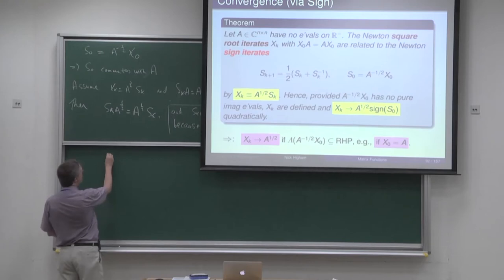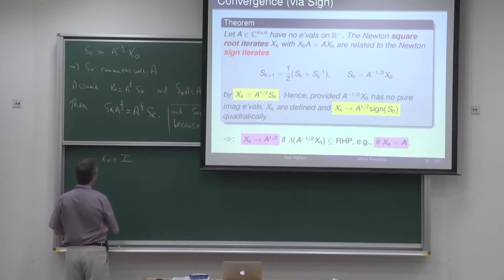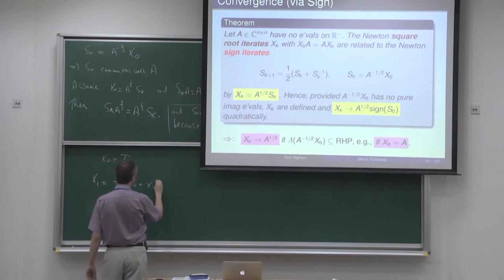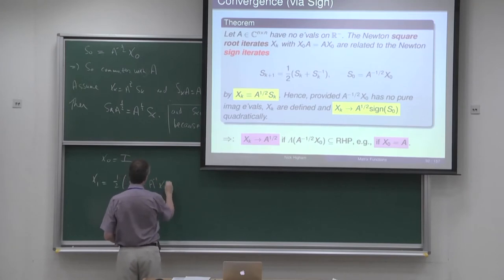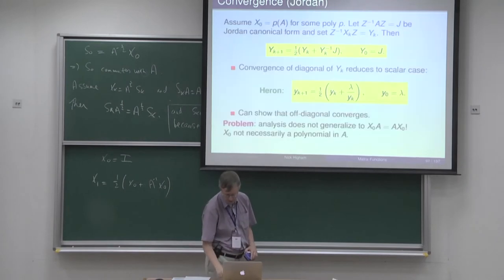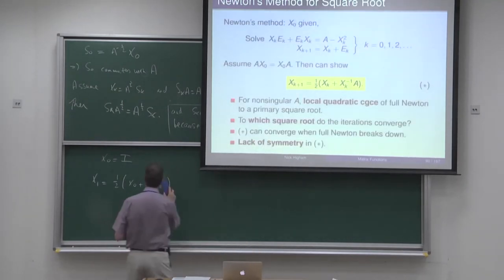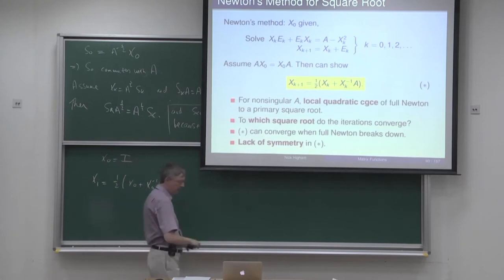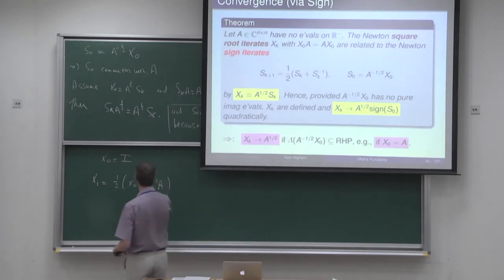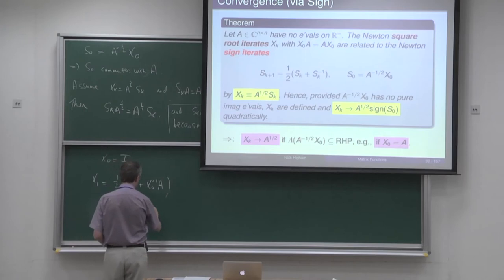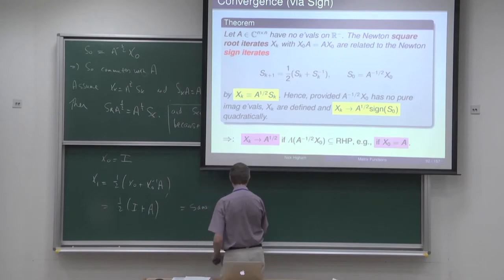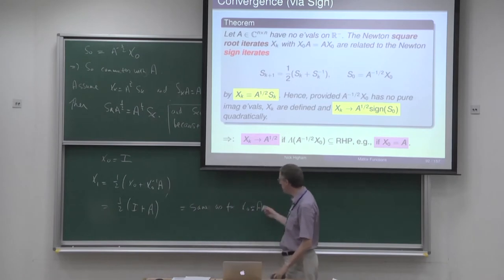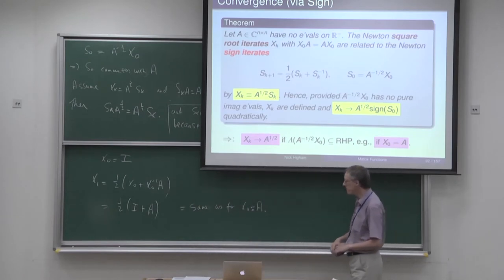The interesting thing is that if you take x_0 equal to I, then x_1 is half of x_0 plus A inverse x_0, which is just a half of (I plus A). And if you take x_0 equal to A, you also get x_1 equal to a half of (I plus A). So x_0 equals I and x_0 equals A give you the same x_1, which is interesting.